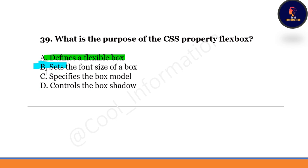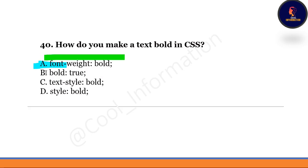Next question: what is the purpose of the CSS property flexbox? Option A is define a flexible box. Option B sets the font size of a box. Option C specifies the box model. Option D controls the box shadow. Option A is correct — flexbox defines a flexible box layout.